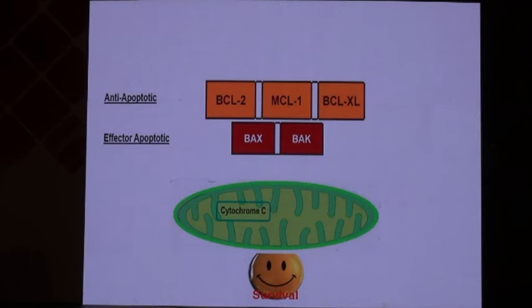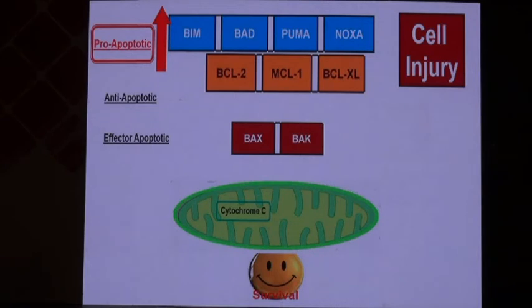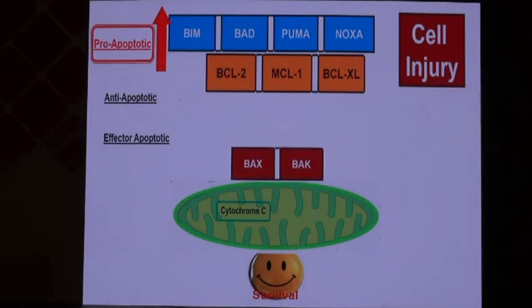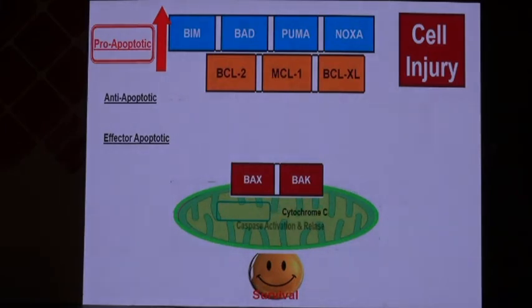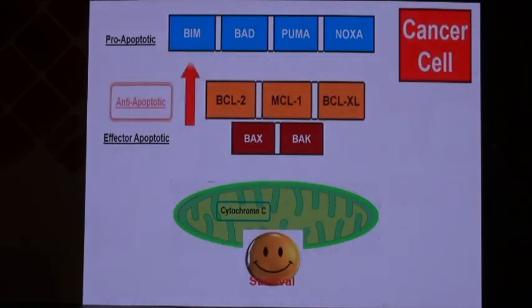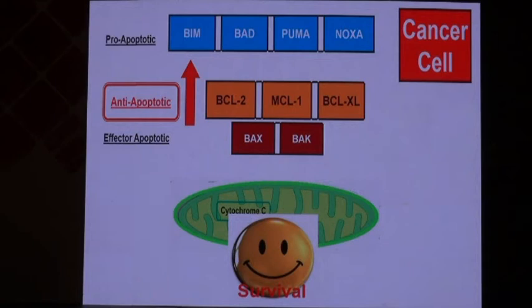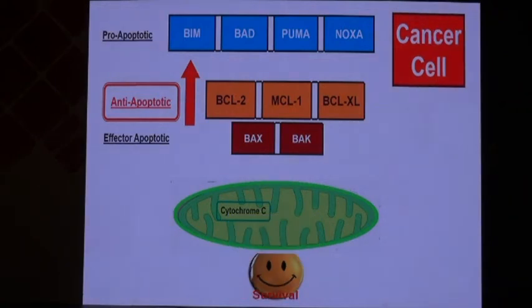With irreparable cell injury, pro-apoptotic proteins sequester the anti-apoptotic proteins, freeing the effector apoptotic proteins to reach the mitochondria, releasing cytochrome C and caspases to trigger apoptosis of the cancer cells. The cancer cell is protected from this by up-regulating anti-apoptotic proteins, allowing it to survive despite normal levels of pro-apoptotic proteins.